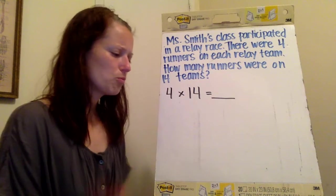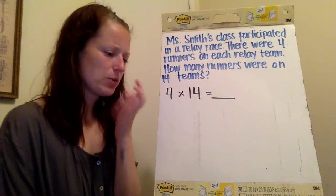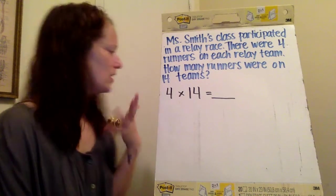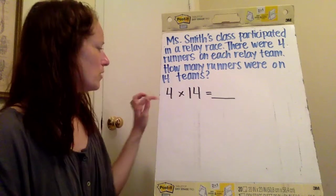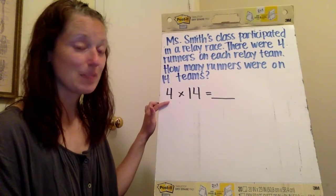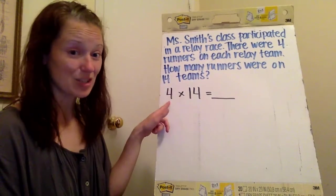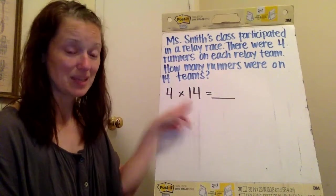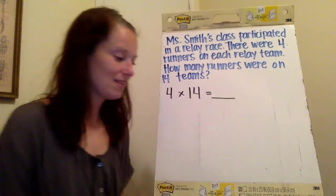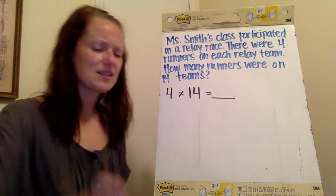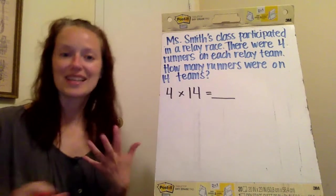So what do we know in this problem and what are we trying to figure out? So we know the number and the size of the groups. So we know the number of groups and then the size of each group, right? So there's 14 groups and we know how many people are in each group, but we don't know how many people there are all together. So I want us to solve this problem by drawing a quick sketch.